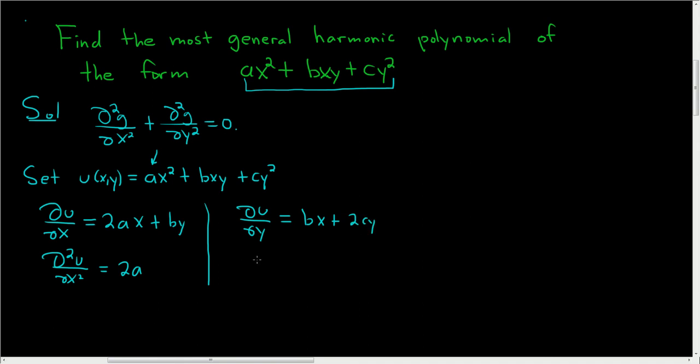And then if we take the partial again with respect to y, we end up with simply 2c. Because the derivative of bx with respect to y is 0.